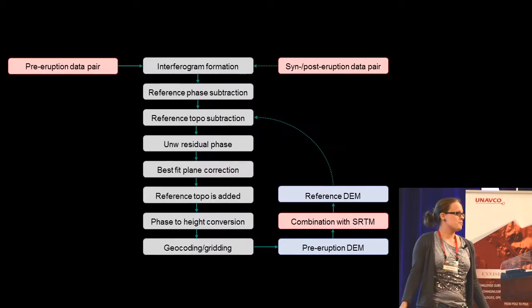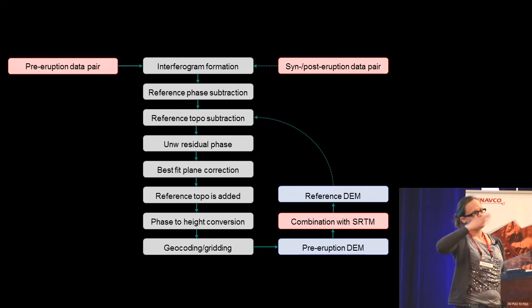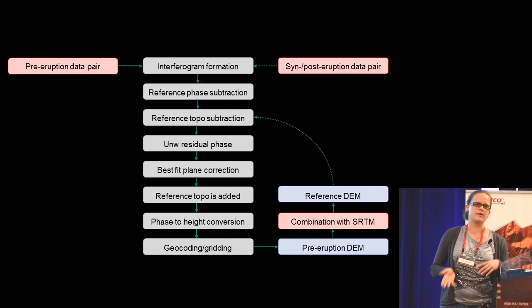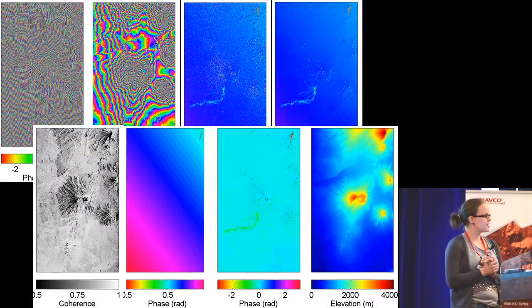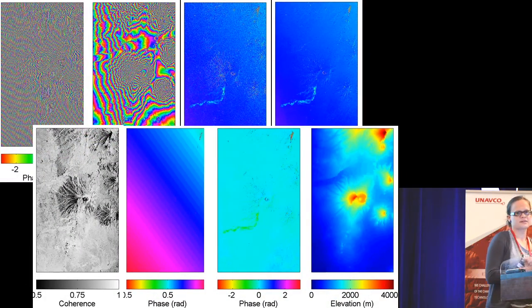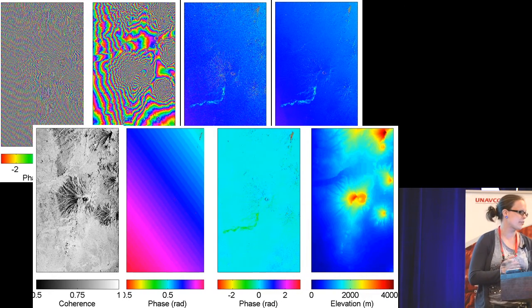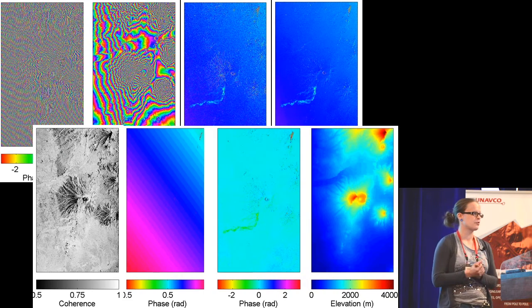I could also show you my workflow. I used the pre-eruption DEM, used it in the interferometric processing. I resulted in a new reference topography. I used this then for my syn- and post-eruption digital elevation model processing. Those are my intermediate results, but five minutes are just too short to give you a broader overview, but I think I will publish a paper about this very soon, so just have a look on my homepage.